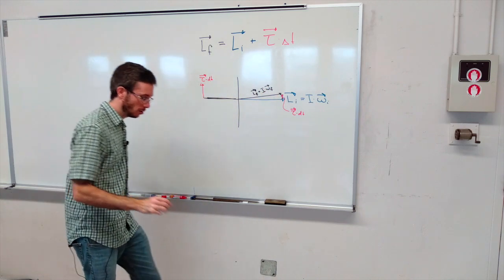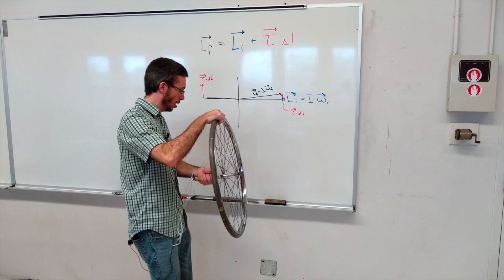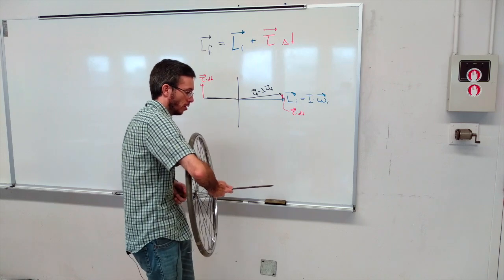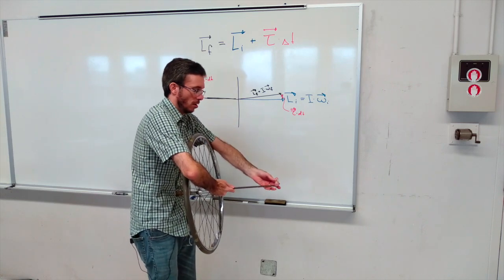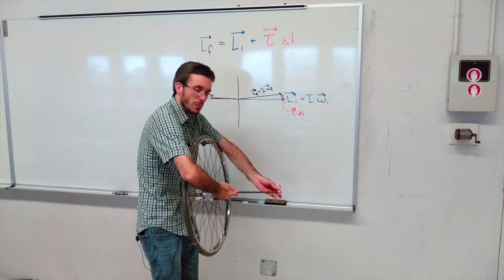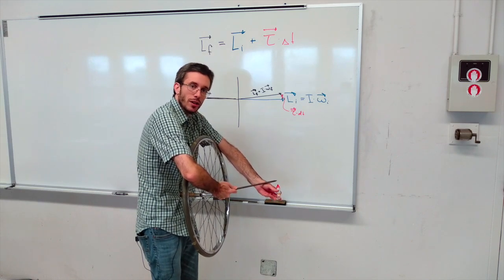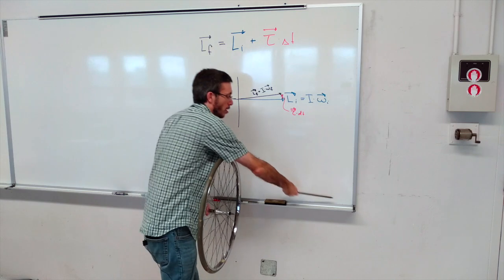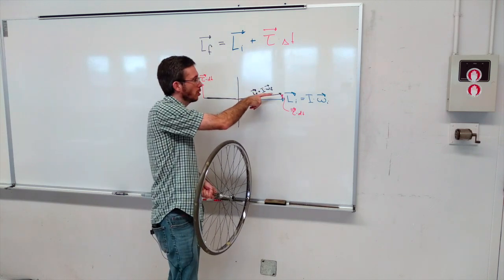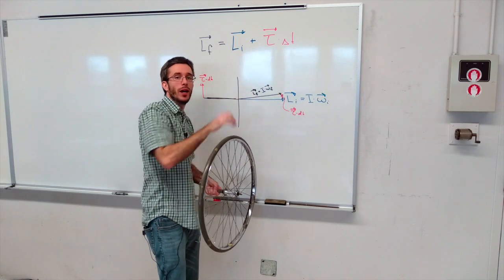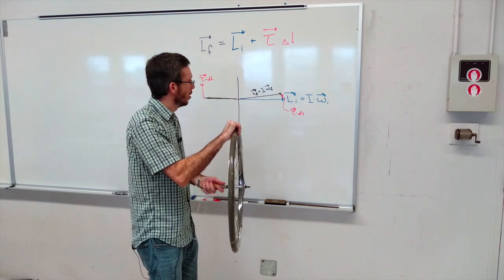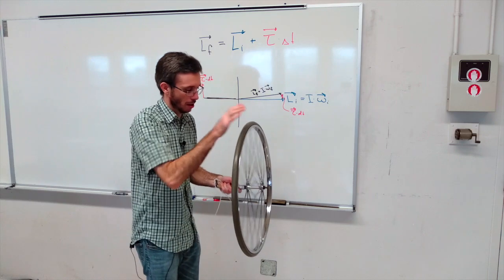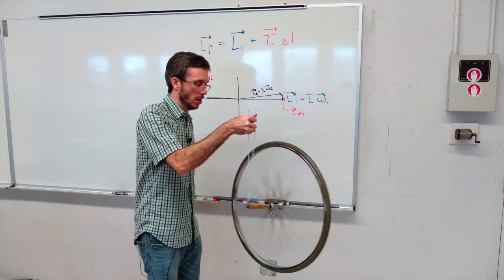From the front view: my initial L points this way, then the torque vector adds in that direction, so the final L must point in this new direction. The only way for this to happen is for the wheel to start rotating to the left. Once it's at this new position, the same process repeats — torque keeps shifting the angular momentum vector again and again. So the wheel should be spinning in this circular direction — and it does!